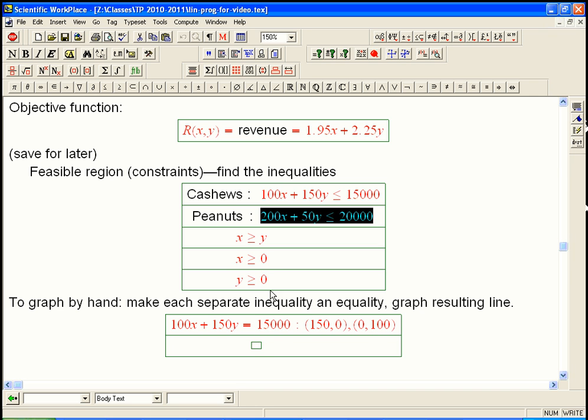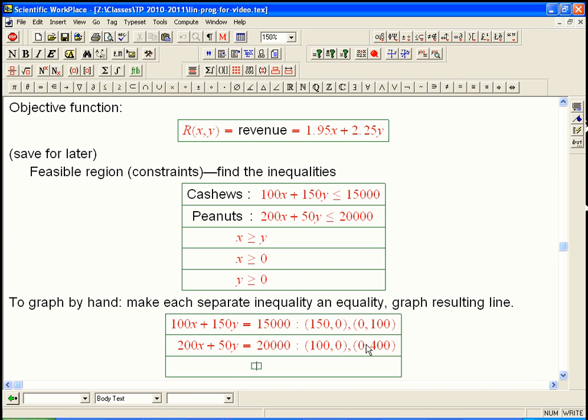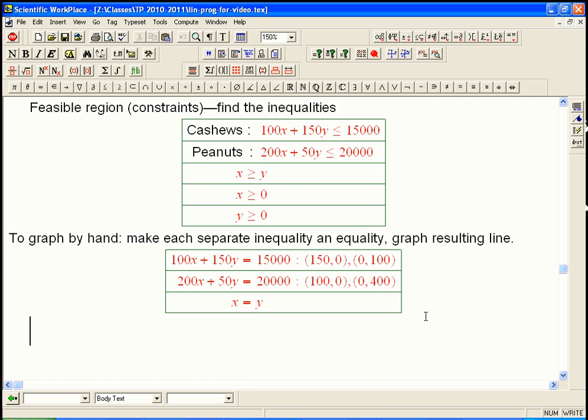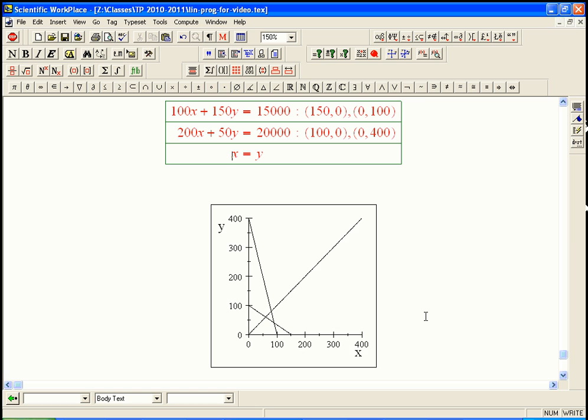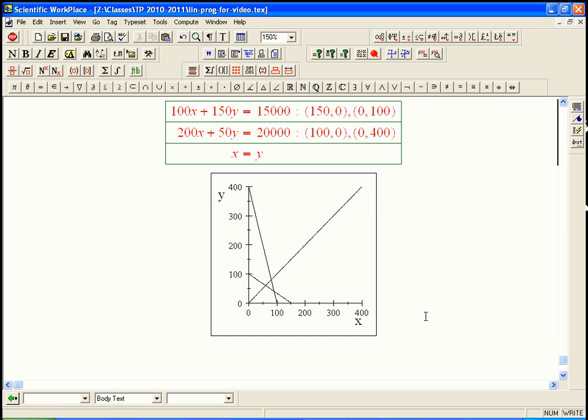Now, what about the peanuts? Let's turn that into an equals. That's going to be, if y equals zero, you're going to get x equals 100. And if x equals zero, you're going to get y is 400. So, that's graphing with the intercepts. Now, x equals y, that's easy to graph. And x equals zero, y equals zero are just the axes. So, I'm just going to go ahead, and I actually prepared this ahead of time, because graphing sometimes takes a few seconds. Here we go. Here's the graph. So, here's x equals y.